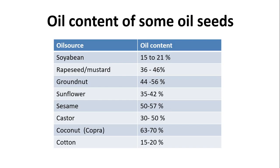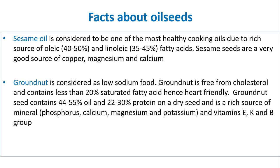Oil content of some oil seeds: Soybean 15–21%, Rapeseed and Mustard 36–46%, Groundnut 44–56%, Sunflower 35–42%, Sesame 50–57%, Castor 30–50%, Coconut 63–70%, Cotton 15–20%.